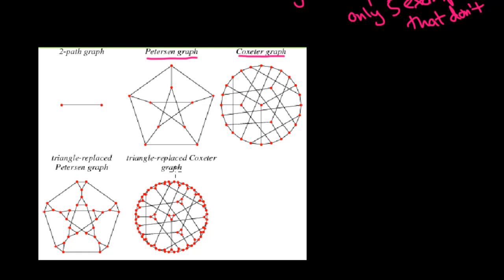So they are known as the Peterson graph, the Coxeter graph, and their triangle replaced graphs, as well as this sort of trivial one. In fact, sometimes this one right here, this two path is sometimes not listed as one of the examples, and we just say the non-trivial cases. Why is this one considered trivial? Well, it's trivial because there cannot be a Hamilton cycle because it doesn't have any cycles. So that's why this one is considered to be trivial.